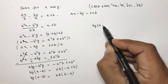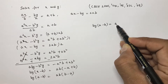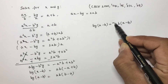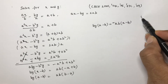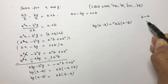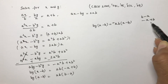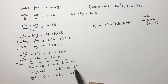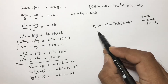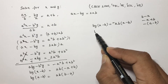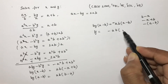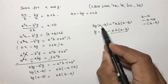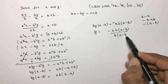Note that b minus a can be written as minus(a minus b). Taking minus common, b·y times (a minus b) equals minus ab times (a minus b). The (a minus b) terms cancel, and b cancels with b, giving y equals minus a.